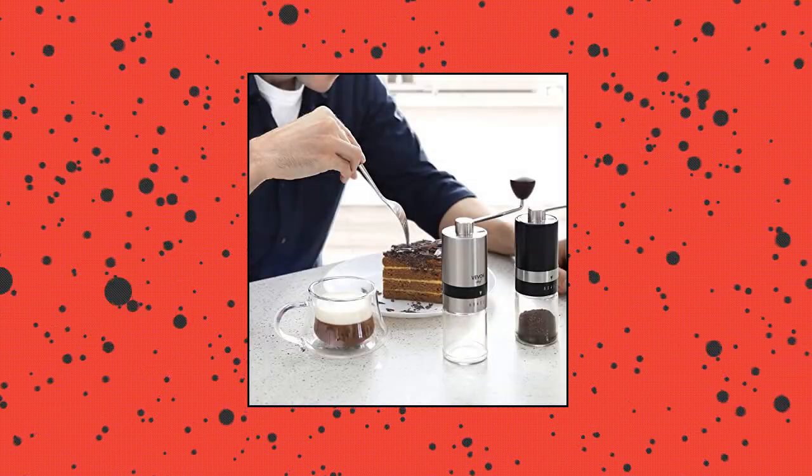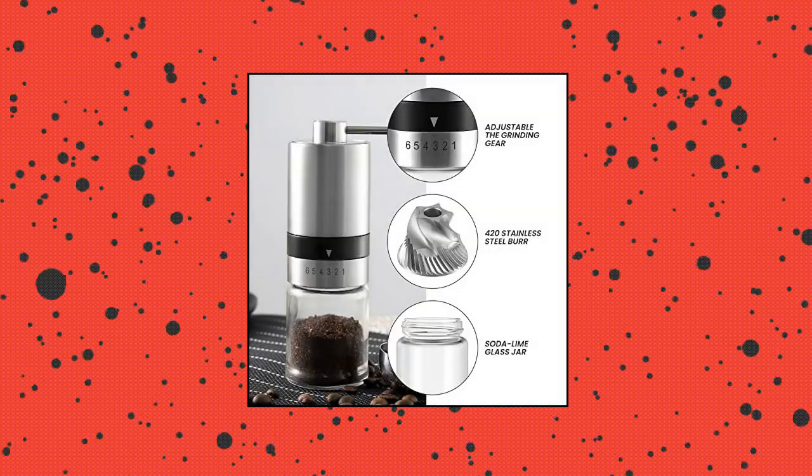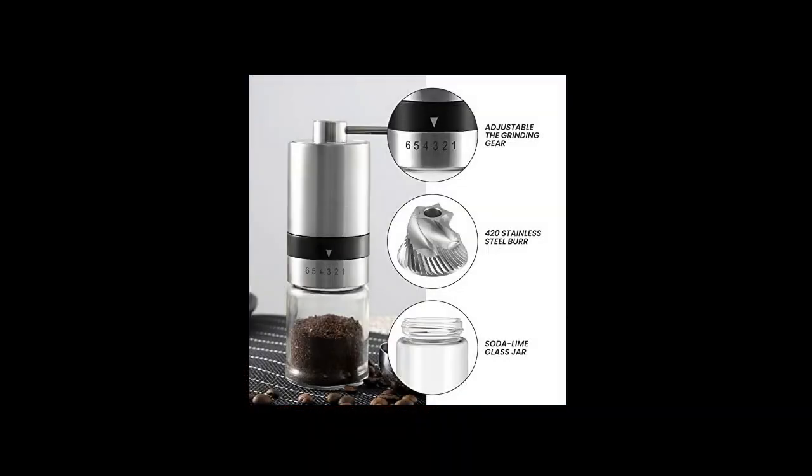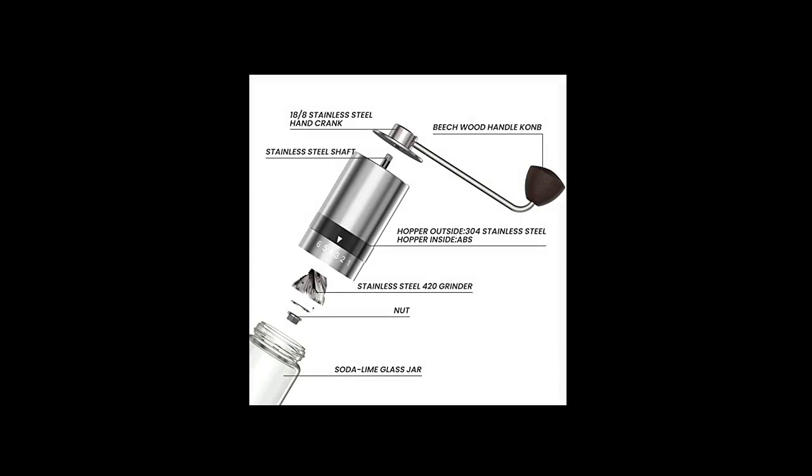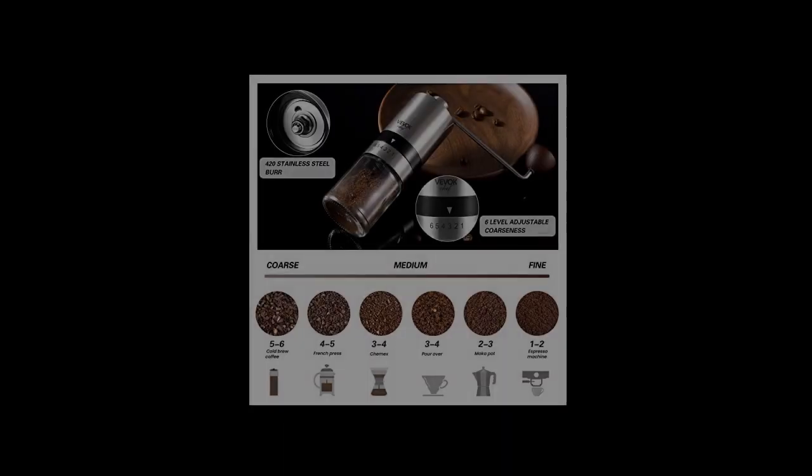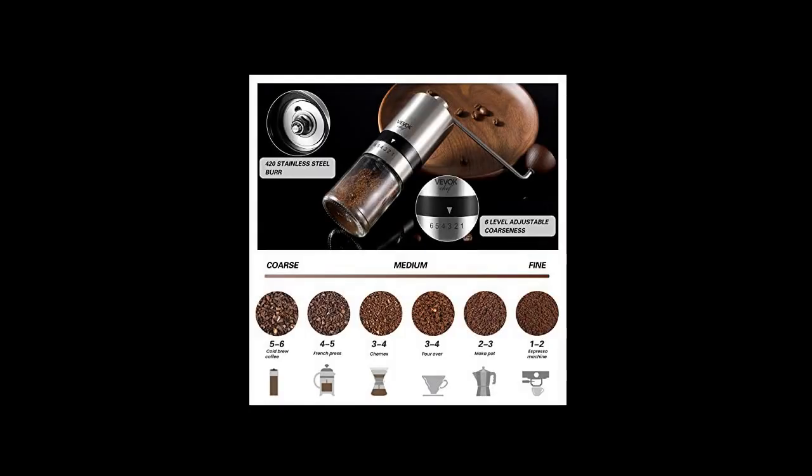For example, here are some right grind sizes: 1-2 grade for espresso machine; 2-3 grade for mocha pot; 3-4 grade for pour over and Chemex; 4-5 grade for French Press.